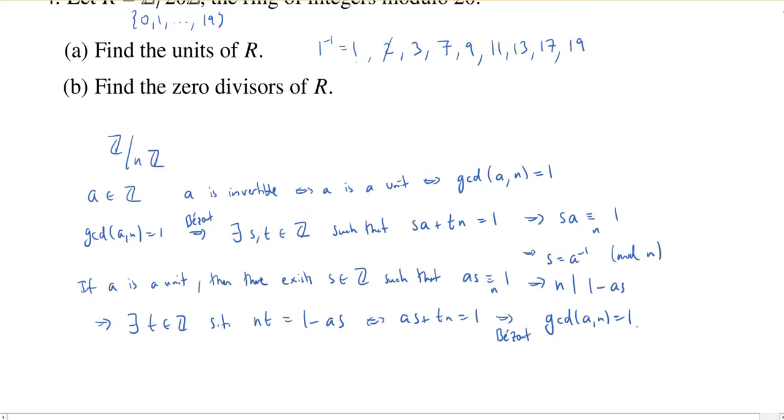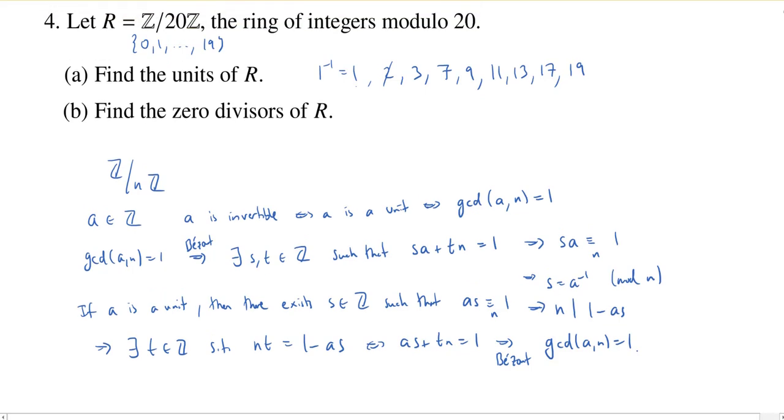All right, now how about the zero divisors? Well, for modular integers, we actually showed that all of these rings are going to break up as a union of the units and the zero divisors. So the other elements are going to be all the zero divisors.